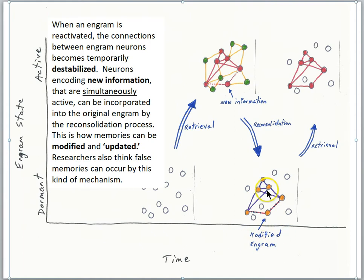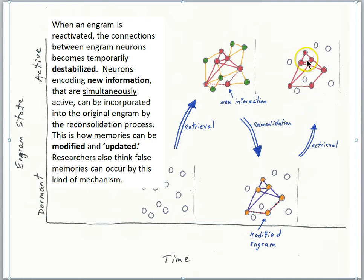The memory has changed. If the new information is accurate, that's one thing, but if it's not accurate, the memory is going to be distorted — it's on the verge of becoming a false memory. Researchers also think false memories can occur by this mechanism. When I retrieve that party memory again, the new information will come along with it. Every time we retrieve a memory, it becomes vulnerable and destabilized, and it is capable of being modified.